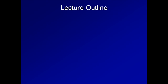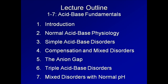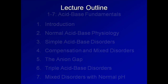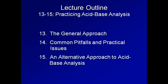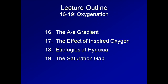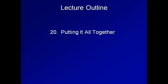Here is the lecture outline for this course. First, lectures 1-7 will focus on some background acid-base physiology and the basic algorithm for identifying pathophysiologic states of acid-base imbalance. Lectures 8-12 will review the differential diagnosis for the five major categories of acid-base disorders. Lecture 13 will summarize the common general approach to acid-base analysis, while Lecture 14 will review some common pitfalls and practical issues not addressed by the general approach. Lecture 15 will present an alternative approach to the common algorithm, one based on the Stewart model. Lectures 16-19 will shift gears and focus on using the ABG to diagnose problems with oxygenation.